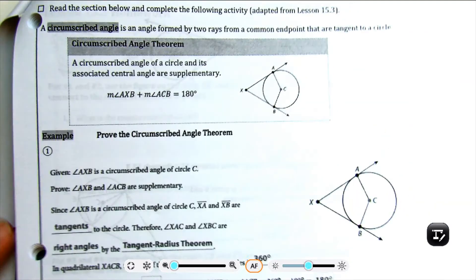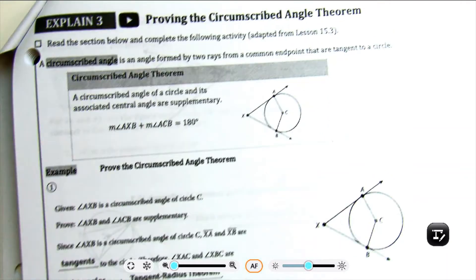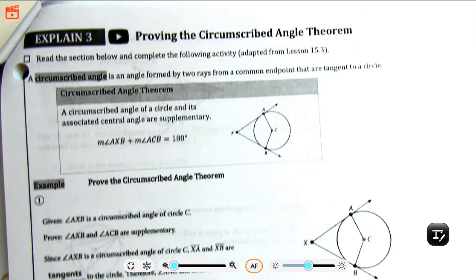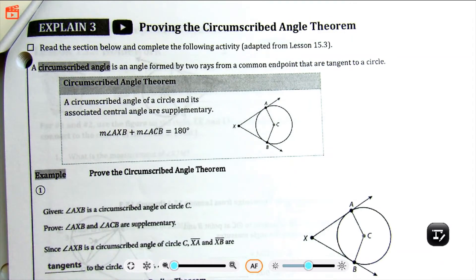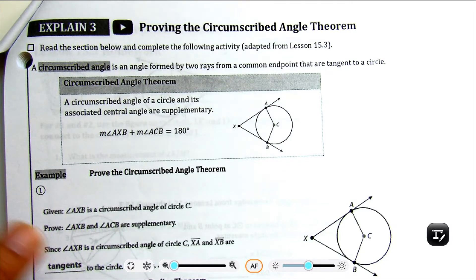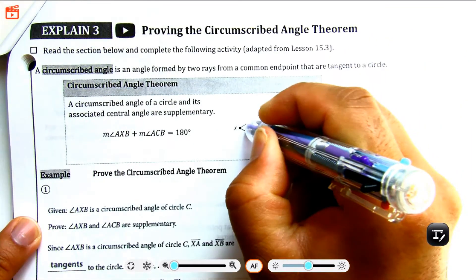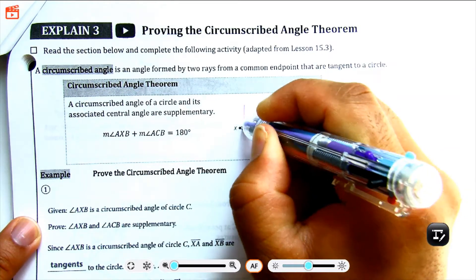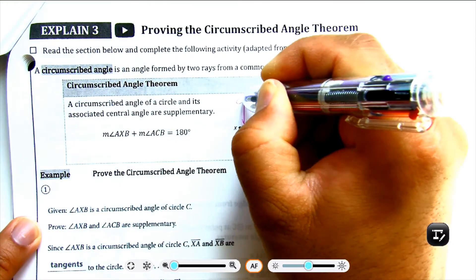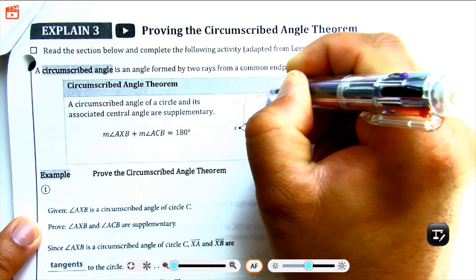Next, we're going to talk about what a circumscribed angle is. A circumscribed angle is an angle formed by two rays from a common endpoint that are tangent to a circle. Let me highlight where the circumscribed angle is in this figure — and that is here. This angle is the circumscribed angle.